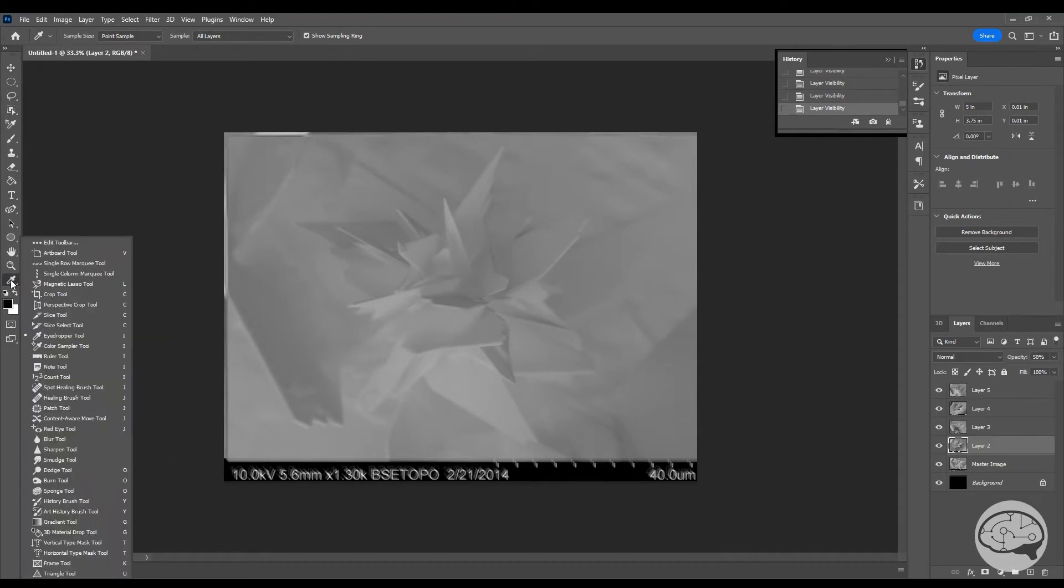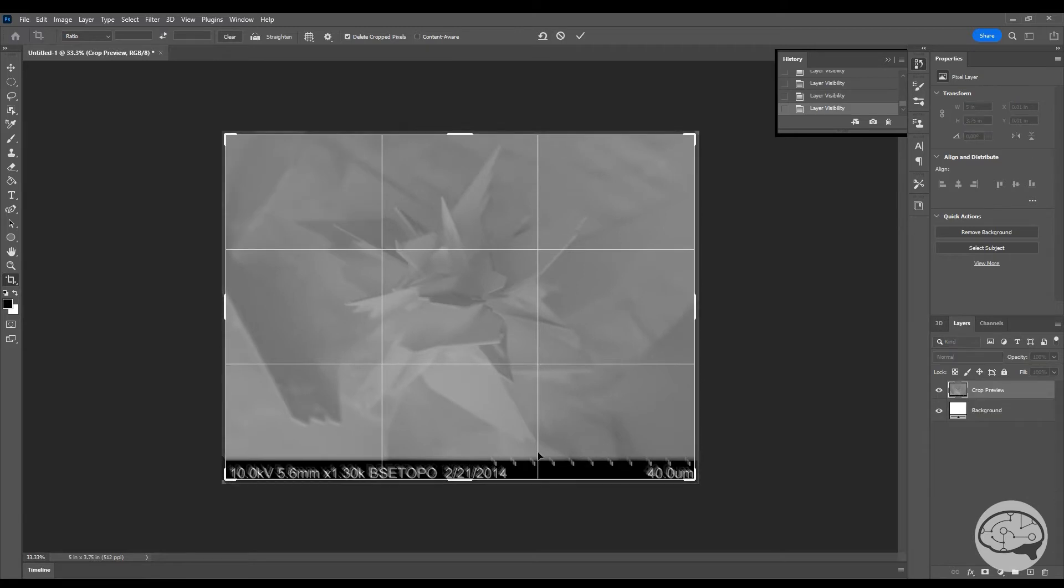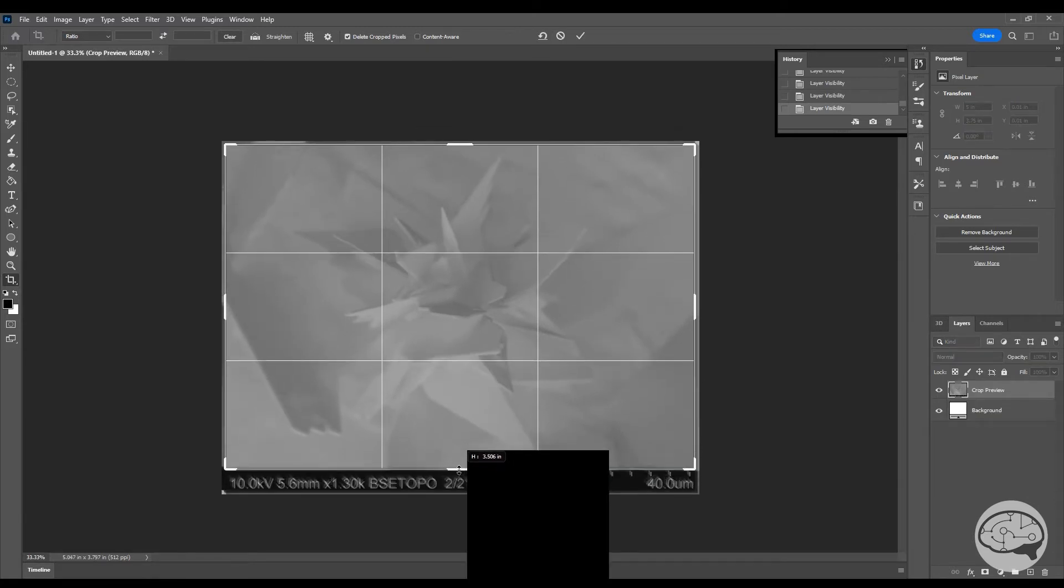After we aligned our images, some of the edges might be a little messy, or maybe we have a data bar from the SEM still in the image. In either case, we'll need to crop that out.